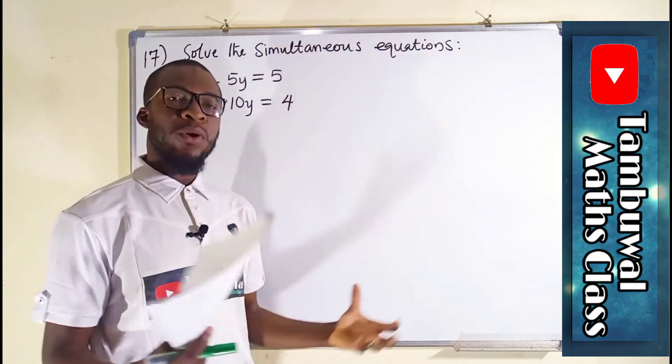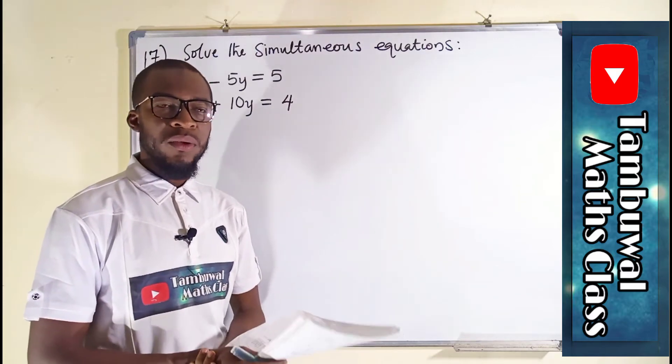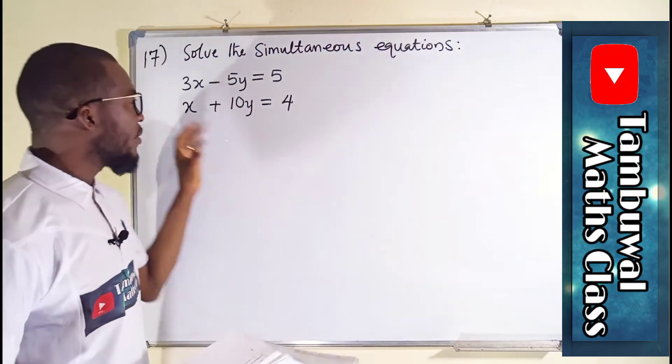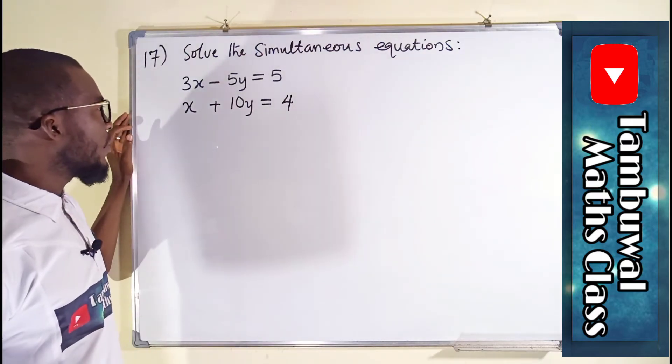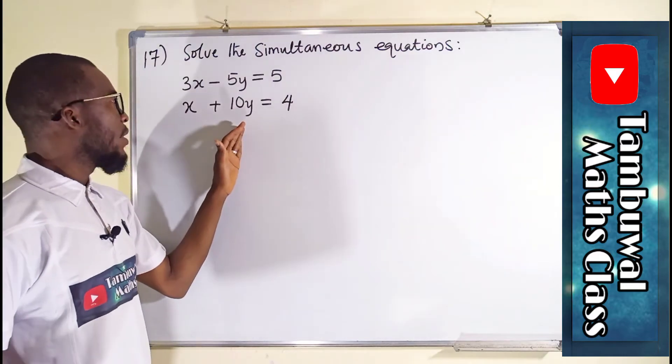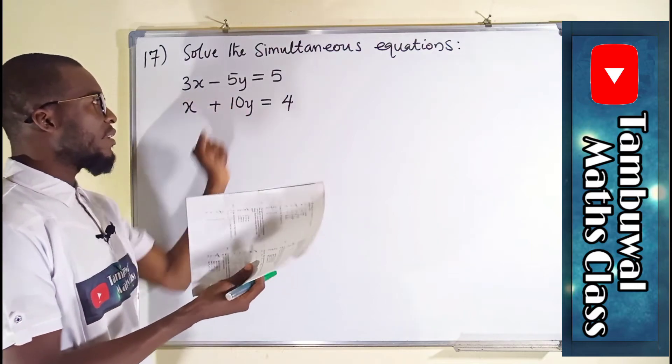There are a couple of ways in which we can solve simultaneous linear equations, but let us try elimination method. To solve these equations using elimination method, we need to consider the coefficients. The coefficients are just numbers that are attached to the unknown variables, which are the letters.